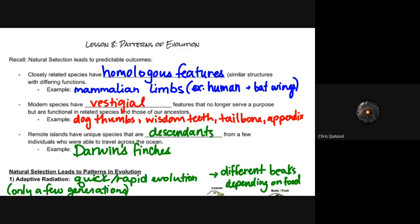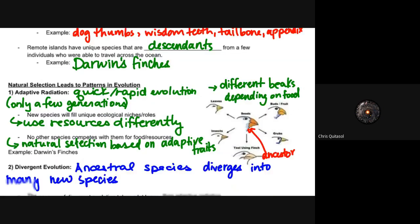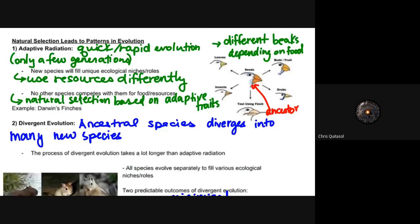When we think about the remote islands that have those unique species, the descendants from a few individuals who were able to travel across the ocean that seeded that island population, they would have similar structures and similar features to the species that were from the mainland. The example here is Darwin's finches. Natural selection can lead to patterns in evolution and there's a few things that I'm going to talk about with regards to those patterns.